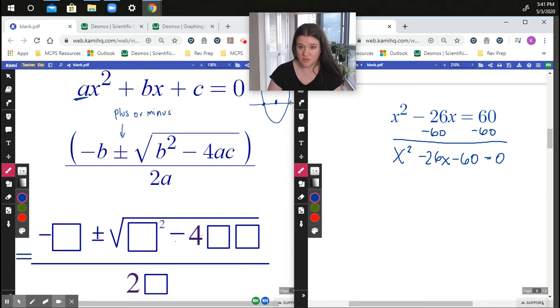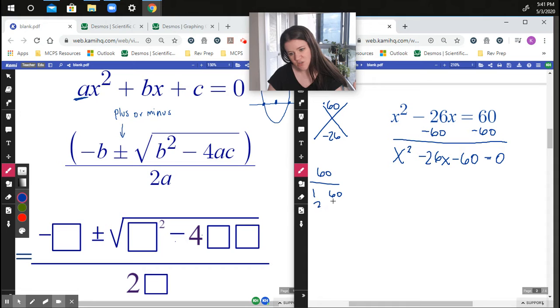But sometimes it's easier just to factor. So if I look at this one and I want to know, well, this factors, well, negative 60 and it's negative 26. So if I look at my factors of 60, one and 60, two and 30, three and 10, four and 15, five and 12, and then six and 10, right?